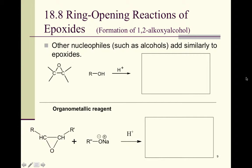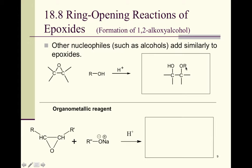Other ring-opening reactions of epoxides can form a 1,2-alkoxyalcohol. When an alcohol is used as the nucleophile in acidic conditions instead of water, the ring is broken and you get an OH and an OR group — for example, an OCH₃ if methanol is used. Similarly, using an organometallic sodium alkoxide reagent opens the ring to produce a 1,2-alkoxyalcohol with the OR group on one carbon and hydrogen yielding an alcohol on the other.